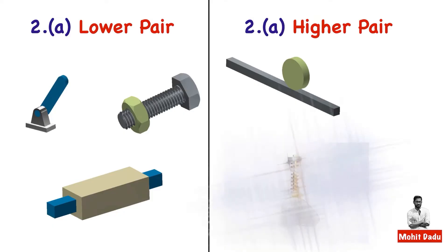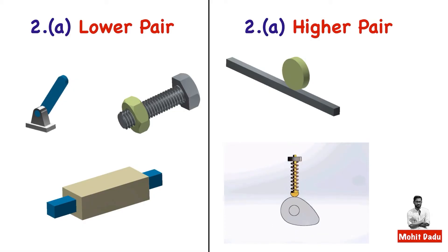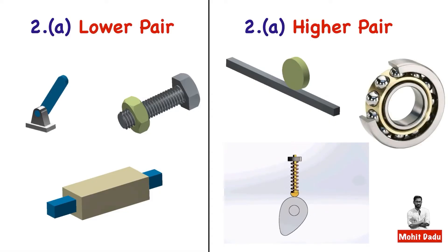In a higher pair, only point or line contact is maintained. The rolling disc makes line contact with the surface. In a cam and follower mechanism, the cam is a non-circular rotating element and the follower tracks its profile — the follower makes point contact with the cam. Ball bearings also have point contact, making them higher pairs.